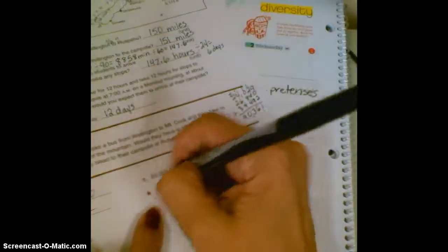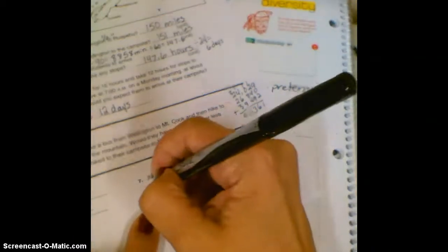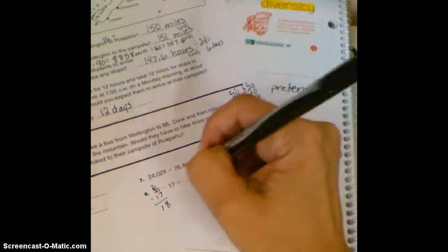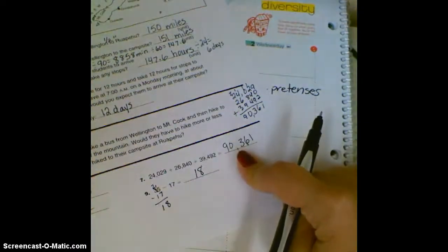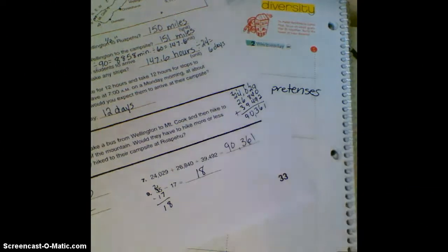And then this one, I like to just stack it up this way so I don't have to rewrite everything. And you get 18. I'm just going to double check the answer on this, make sure I'm right. 90,361. We did it right. Thanks for working with me today.